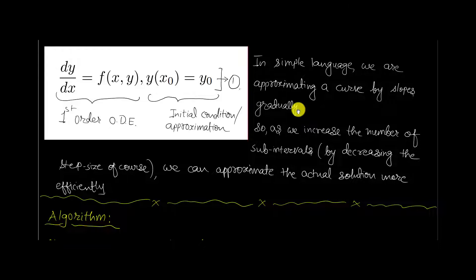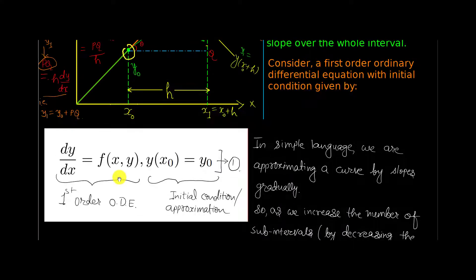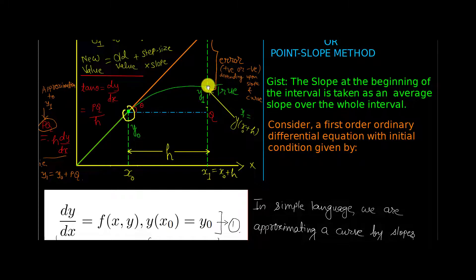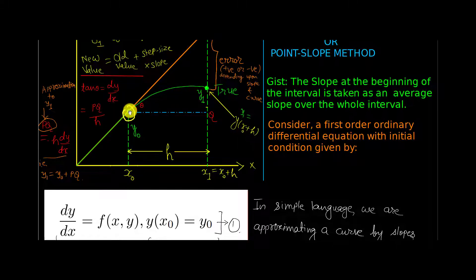y2 is equal to y1 plus h times f of x1, y1 — evaluated at x1, y1. As we increase the number of sub-intervals by decreasing the step size, we can approximate the actual solution more efficiently. As you increase the number of sub-intervals, you will have a refined result. If h is very small, then you have y0, y1, y2, y3, y4, and so on, going up to yn. Starting from y0, you will have small variations based upon tangents drawn at each and every point.